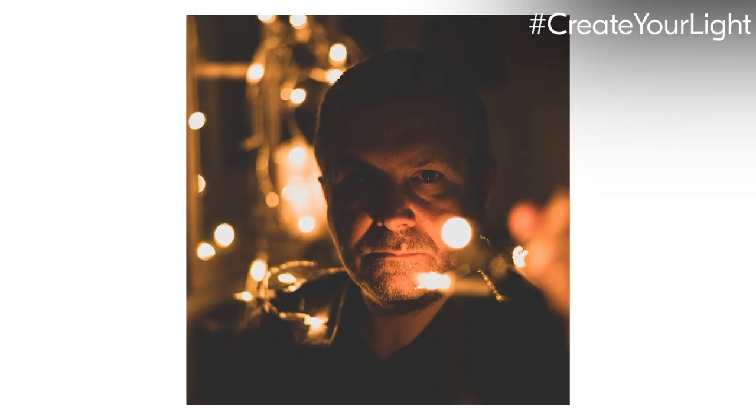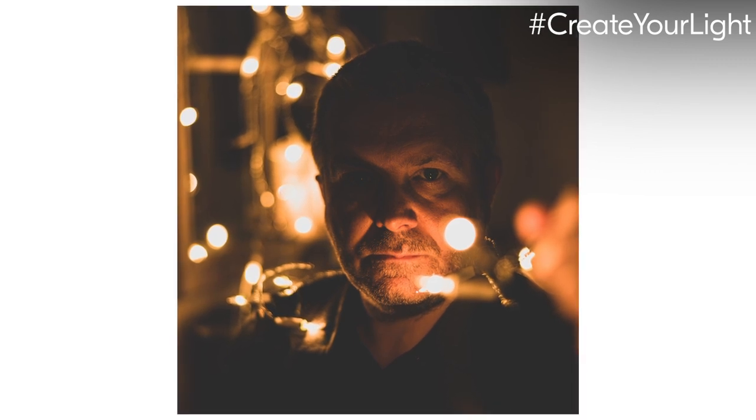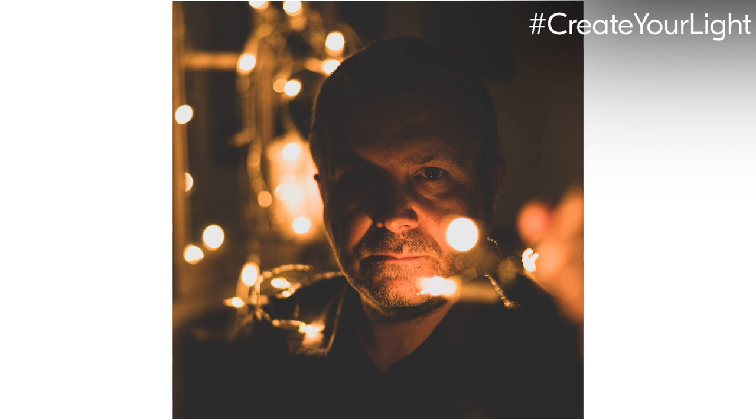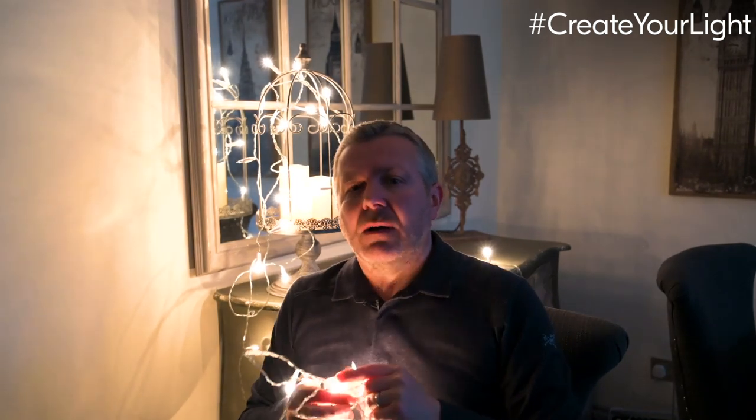Here's another composition technique: create a bokeh background. A bokeh background is where you have light sources behind you, and if you shoot at f/1.8 or f/1.4 you'll create beautiful circles in the background. I'm just using some Christmas tree lights — I have them behind me and also in front coming towards the camera, so both the foreground and background are out of focus, with me in the depth of field in the middle. I'm currently recording on f/4 so I won't get the same bokeh as when I'm shooting on the 50mm f/1.8 G you just saw.